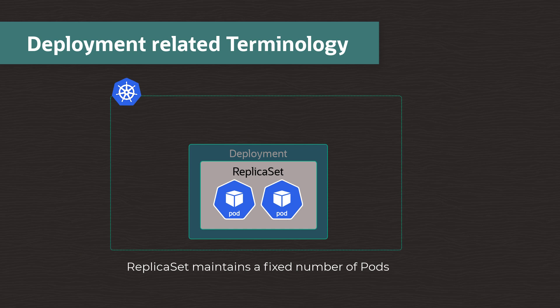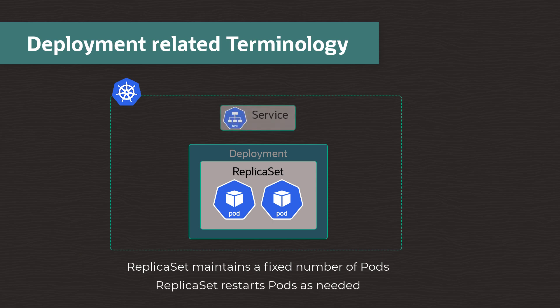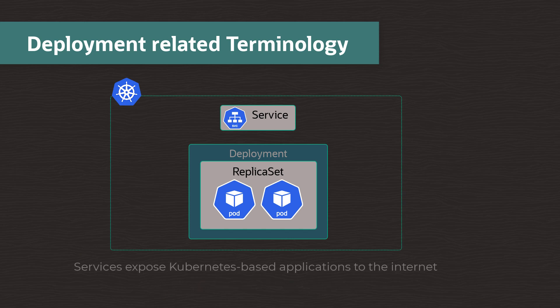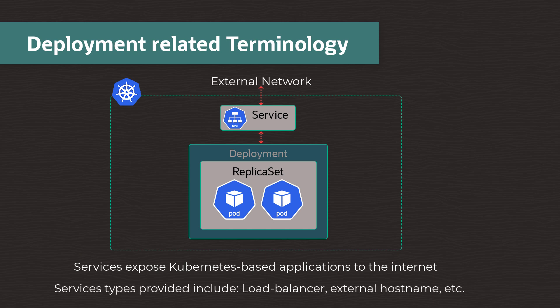But what use is an application that cannot communicate with your customers across the intranet or internet? This is where the service helps, by providing the mechanism to expose the application's pod or pods for network access. Services may enable network traffic to communicate between pods in the cluster, or to enable communication to or from the external world.